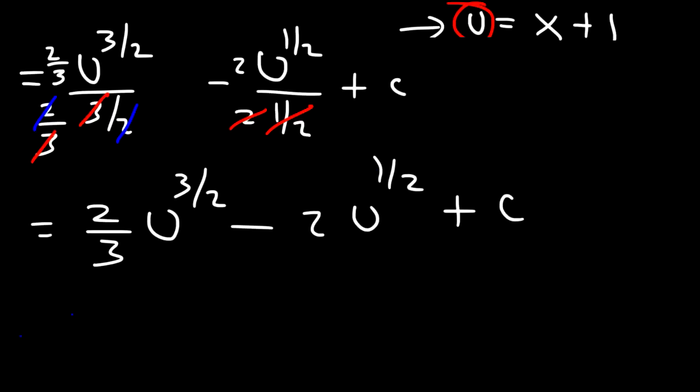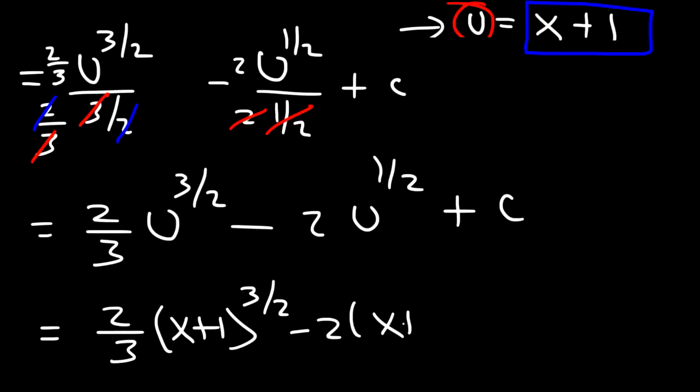Now the last thing we need to do is replace u with x plus 1. And so the final answer is going to be 2 over 3 times x plus 1, raised to the 3 over 2, minus 2 times x plus 1 to the 1 half, plus c.